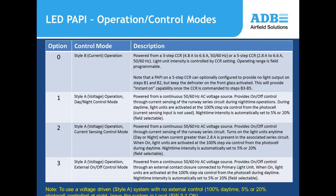Several operational control modes are available. The most common is simply turning on the unit. A current-driven PAPI operates at whatever step the constant current regulator is set to. A voltage-driven system has options such as photocell control — full intensity during the day, dropping to 5 or 20% at night — selectable in the field. The system can also be interlocked with a nearby series circuit so the PAPI only activates when, for example, runway edge or threshold lights are on.